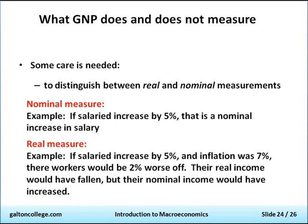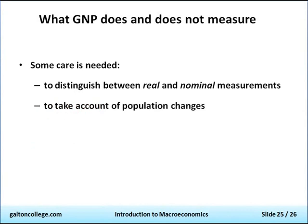So when we compare gross national products between countries, we have to allow for the different rates of inflation. We also have to take account of the population. To say a country has a GNP of X trillion dollars doesn't mean much if the population is X billion — on average, the people are very poor. Conversely, a small country may have a low GNP but very few people living there, and hence those people may be very rich.